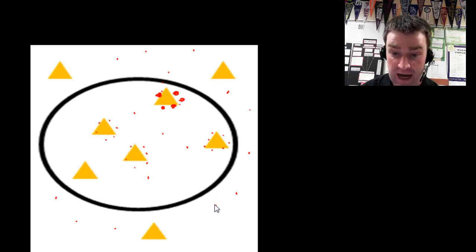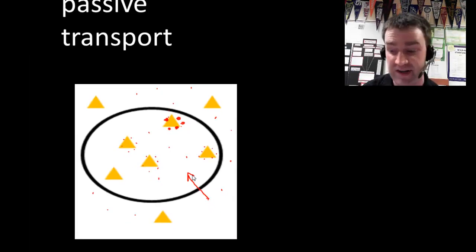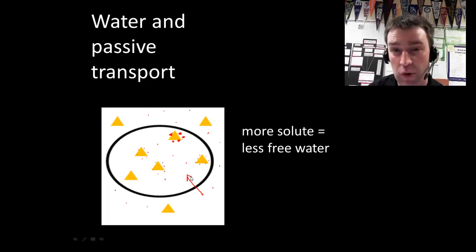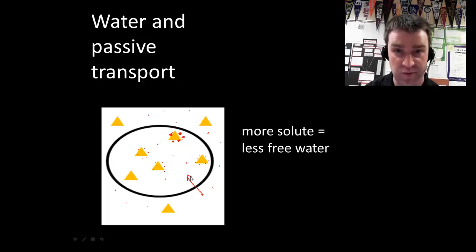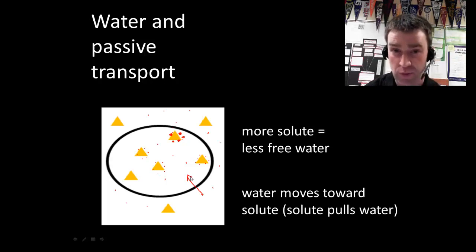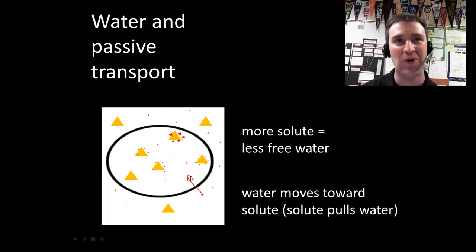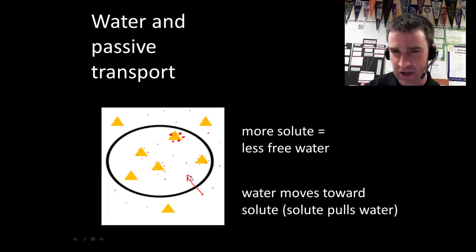Water moves from high to low concentration — in this case by going into the cell where solute is higher. Wherever there is more solute, there are fewer free water molecules and therefore a lower water concentration. So you can predict water's movement by saying water always moves toward the region of greater solute concentration. You can think of it as greater solute concentration or lower water concentration — almost like the solute is pulling the water toward it wherever it's higher in concentration.